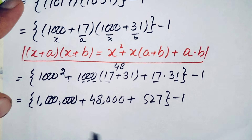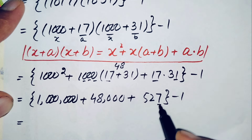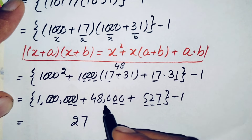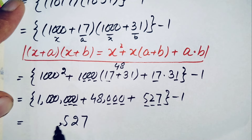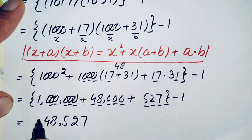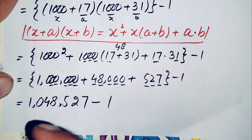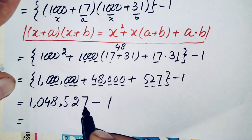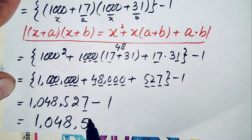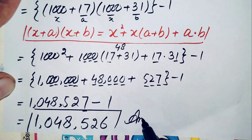Adding these three numbers: starting from the ones place, 7 plus 0 plus 0 is 7; 2 plus 0 plus 0 is 2; 5 plus 0 plus 0 is 5; then 8, 4, 0, 1 — giving us 1,048,527. Finally, subtracting 1 from this gives 1,048,526. So the final answer is 1,048,526.